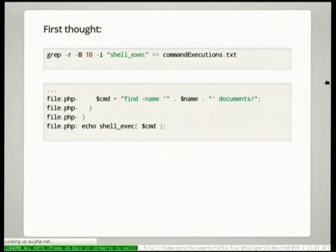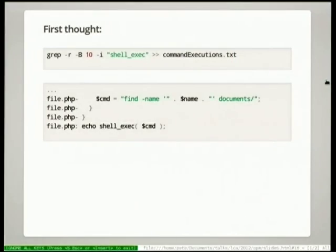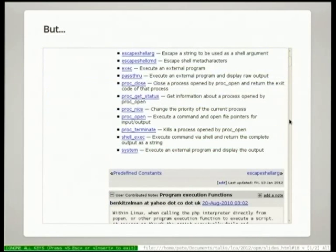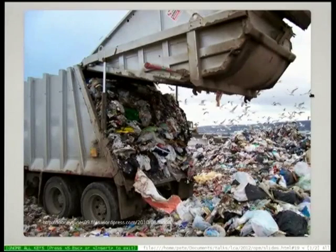I was sitting there thinking someone's actually executing code on my machine. I need to find out where this vulnerability is. So I fired up grep and searched for all the shell-executing code. The -B 10 flag gives me 10 lines of context when you find a matching line. You can see there's a command getting executed and a name variable that's not escaped using escapeshellargs. But I don't actually know — maybe it was escaped 11 or 12 lines up. And with a million lines of code, you end up with a big pile of rubbish to sort through. It's even worse when you look at all the different ways PHP can execute functions on the shell — you get this huge pile of rubbish.